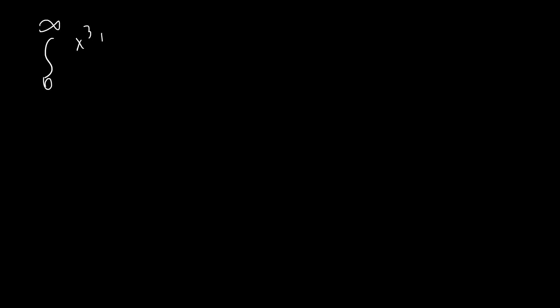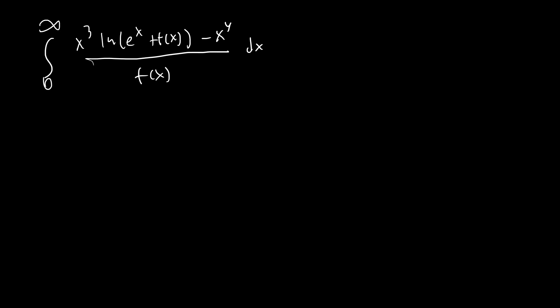So let's go ahead and write out the integral: the integral from 0 to infinity of x cubed times ln(e^x + f(x)) minus x to the fourth, all over f(x). Now that we've written it in this format, we have an f(x) on the top and an f(x) on the bottom, so this is a place where we're actually going to be able to use Feynman's trick in a pretty cool way.